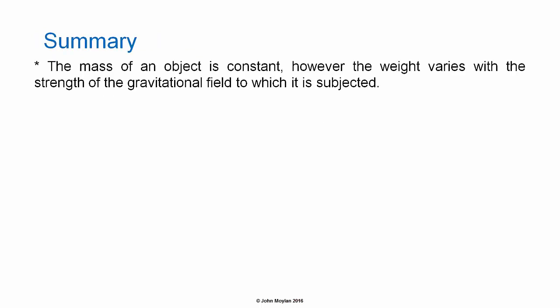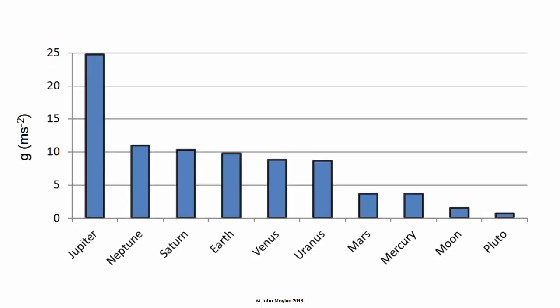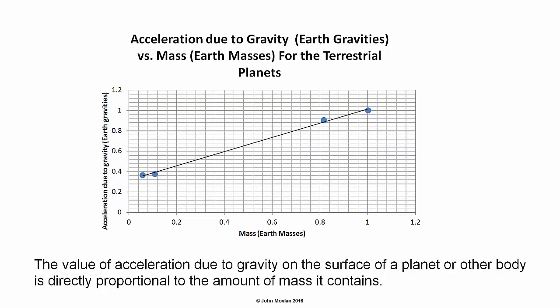Summary: The mass of an object is constant, however the weight varies with the strength of the gravitational field to which it is subjected. Weight can be calculated using the formula F subscript g equals mg. Planets and other bodies vary in mass and size, and the value of acceleration due to gravity on the surface of a planet is directly proportional to the amount of mass it contains.